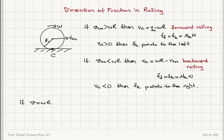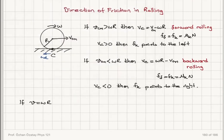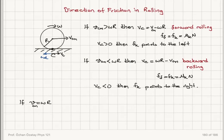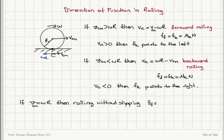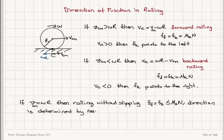What if I have rolling without slipping? If v_cm equals ωR, then the ωR and center of mass velocity would be exactly balancing each other — that gives rolling without slipping. In this scenario, the contact velocity is zero. Therefore, the nature of the force of friction is static, and the direction is determined by Newton's laws of motion.